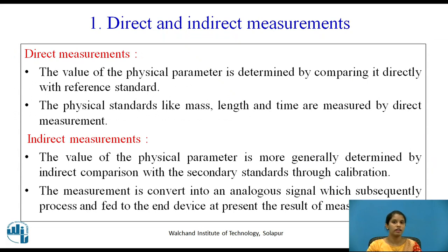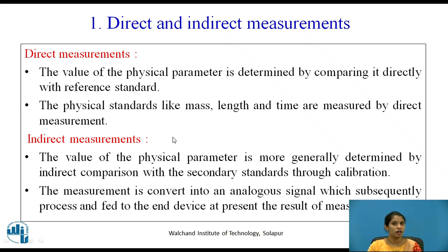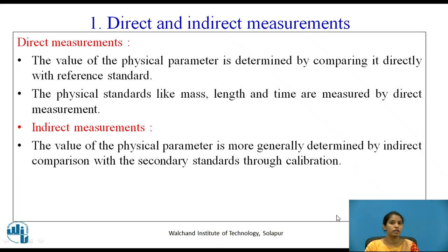Direct and indirect measurements. In direct measurement, the value of a physical parameter is determined by comparing it with the standard reference — the quantity to be measured is compared with international standards which are proven. Physical standards like mass, length and time are measured by direct measurement. In indirect measurement, the value is more generally determined by indirect comparison with secondary standards through calibration.